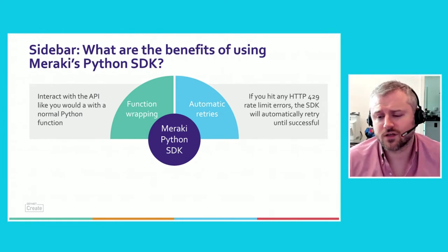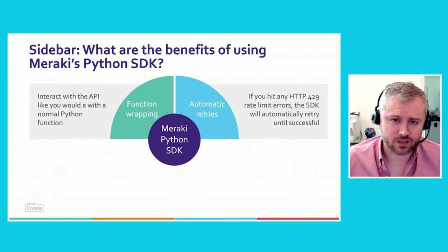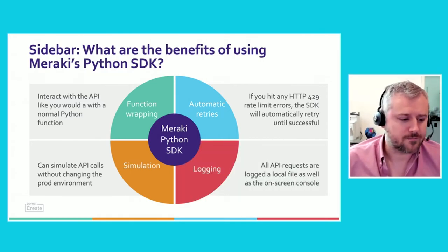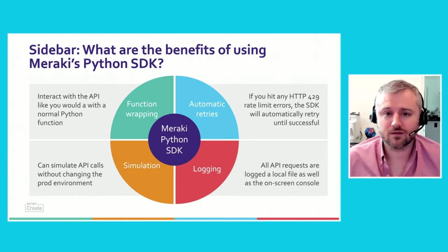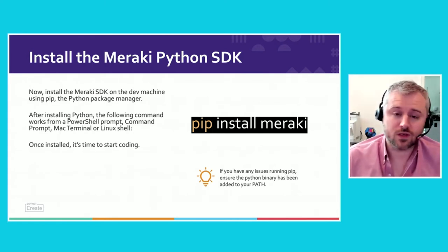We also handle automatic retries. So if you hit any HTTP 429 rate limits, the SDK will handle the automatic retry for you so that you get the data you need without worrying about the rate limit. You can also simulate API calls without changing the production environment, which can be very useful if you want to see what will happen. It also handles logging and other convenient processes so you can focus on writing the code and getting the job done. The Meraki Python SDK is updated every week with support for the latest API endpoints. If you haven't yet installed it, install it using pip with the command: pip install meraki.